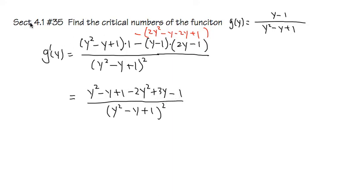And overall on the top, it's going to be y²-2y² which is -y². -y+3y is +2y. And then 1-1 is 0. And that would be divided by this as the denominator: (y²-y+1)². So this is going to be g'(y), our derivative.